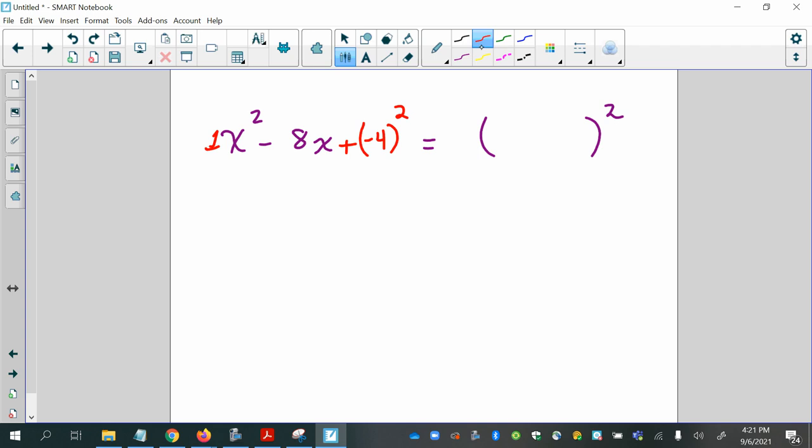And once I do that and simplify it, it's going to be x squared minus 8x. And then a negative 4 times a negative 4 would give me a positive 16. And written as a binomial squared, it's the square root of the first term, the square root of the last term, and then whatever the sign is in the middle. So this pattern will work over and over and over again to complete the square.